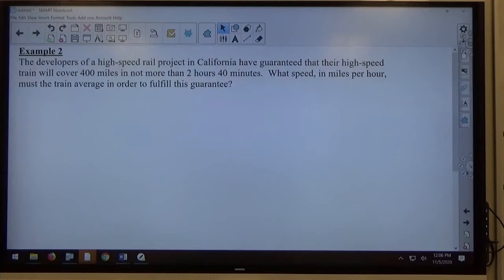Okay, the developers of a high-speed rail project in California have guaranteed that their high-speed train will cover 400 miles in not more than 2 hours and 40 minutes. What speed in miles per hour must the train average in order to fulfill this guarantee?